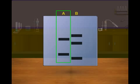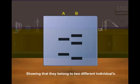As seen in the image, the two samples A and B have different patterns of bands, showing that they belong to two different individuals.